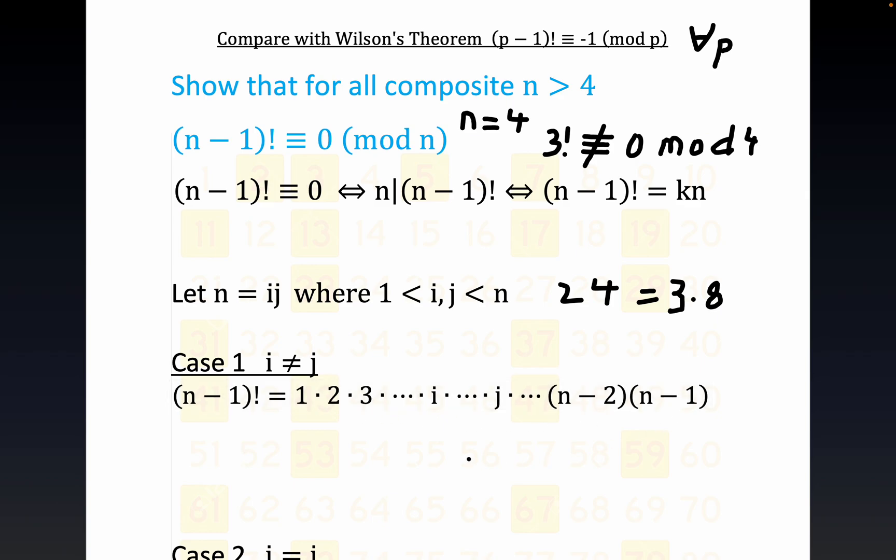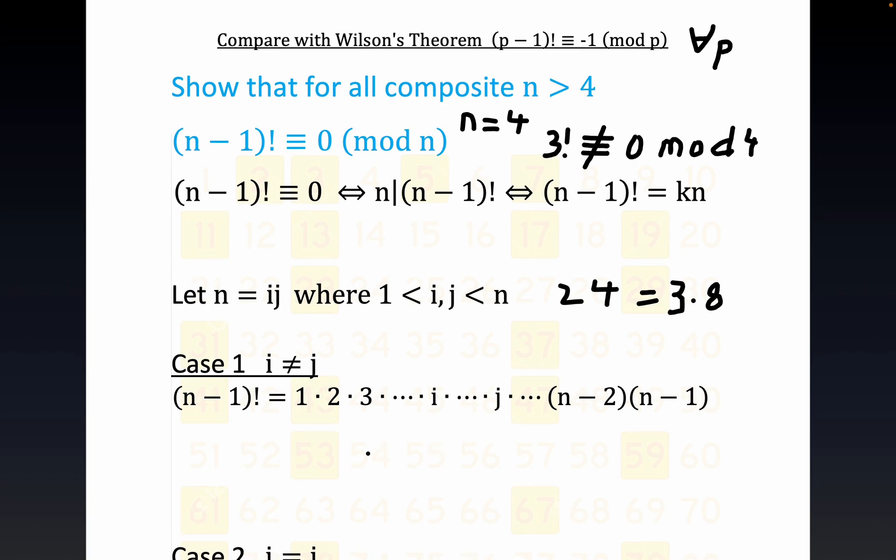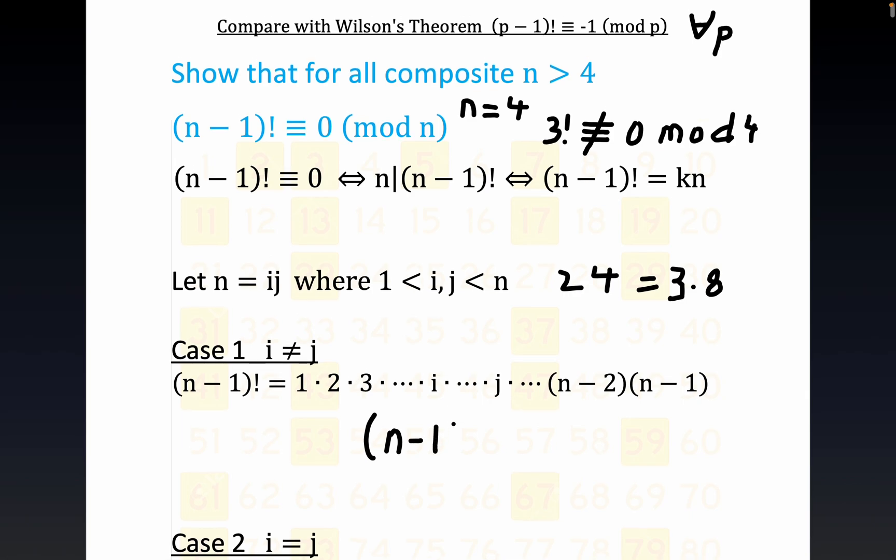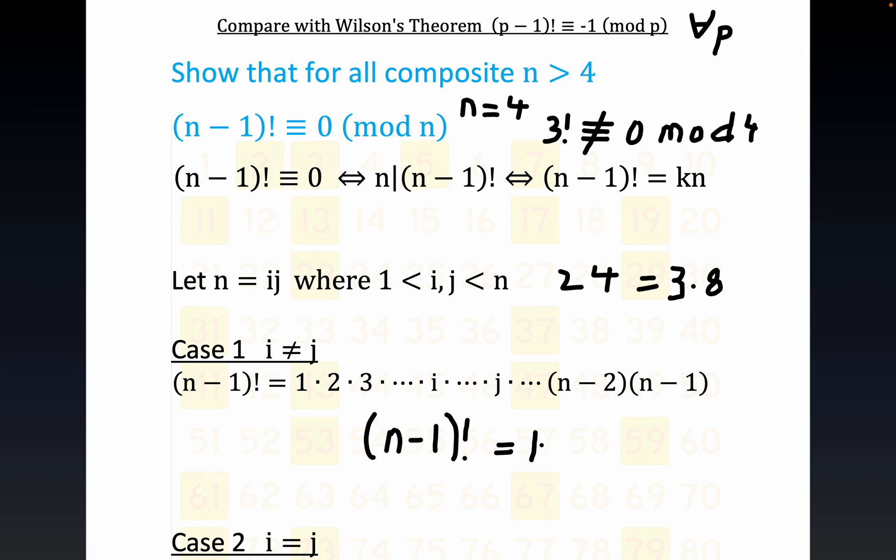And so we can see pretty quickly that (n-1)! is equal to some K times - and I'll write this down just so we can be really formal about it - but we know that it's some K times i times j, right?